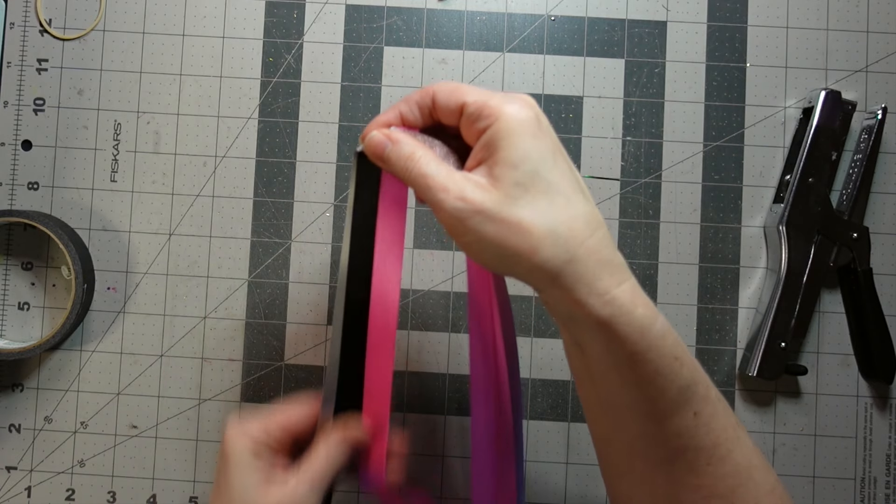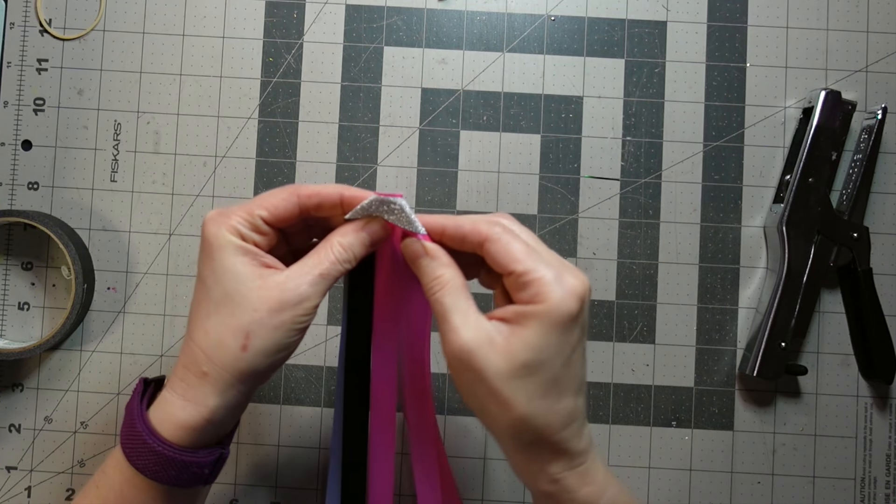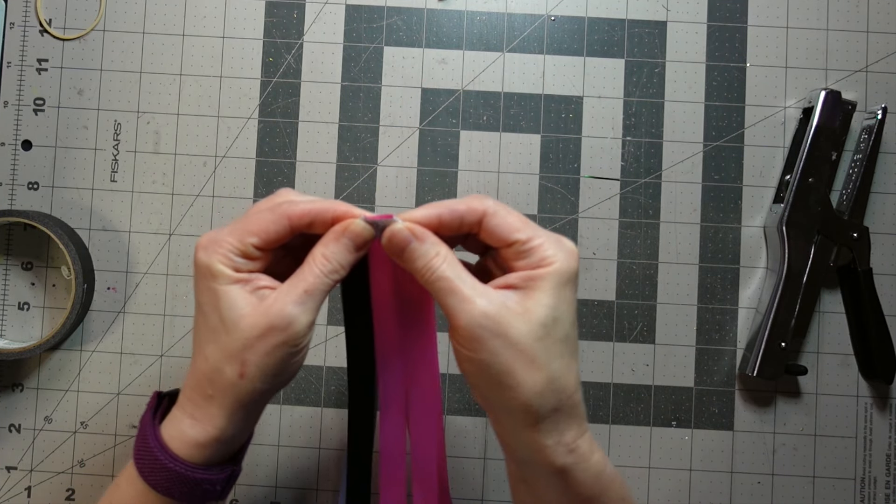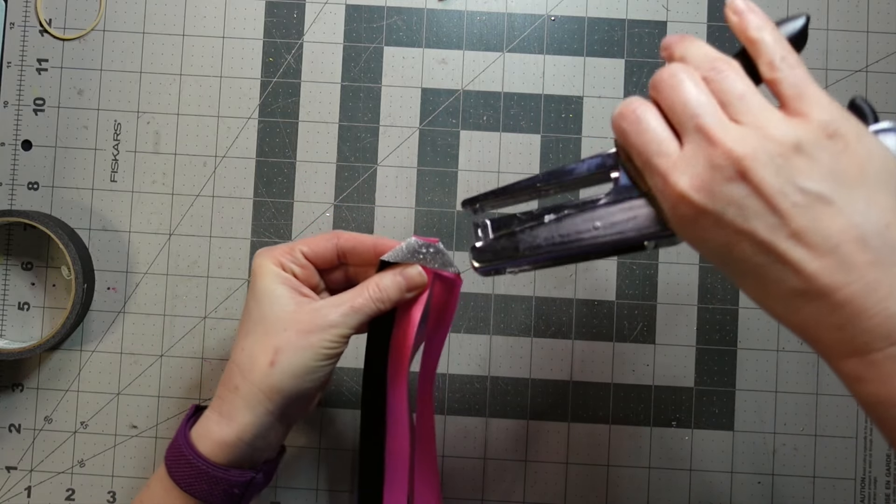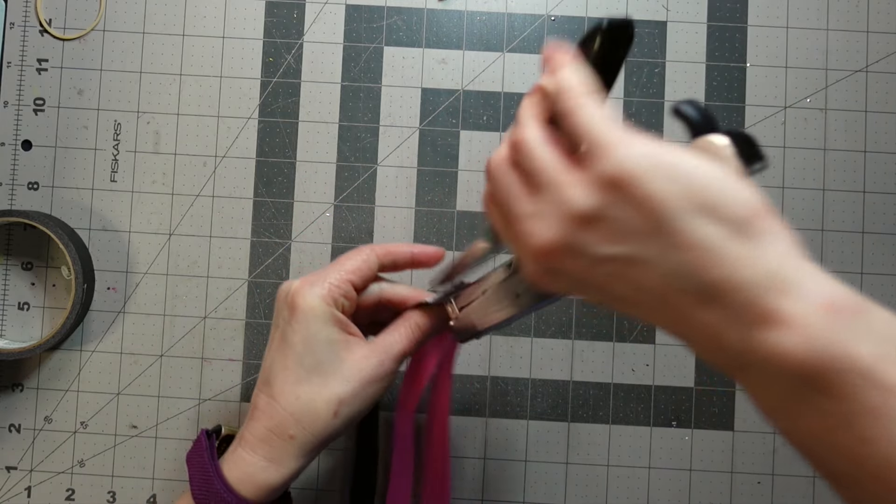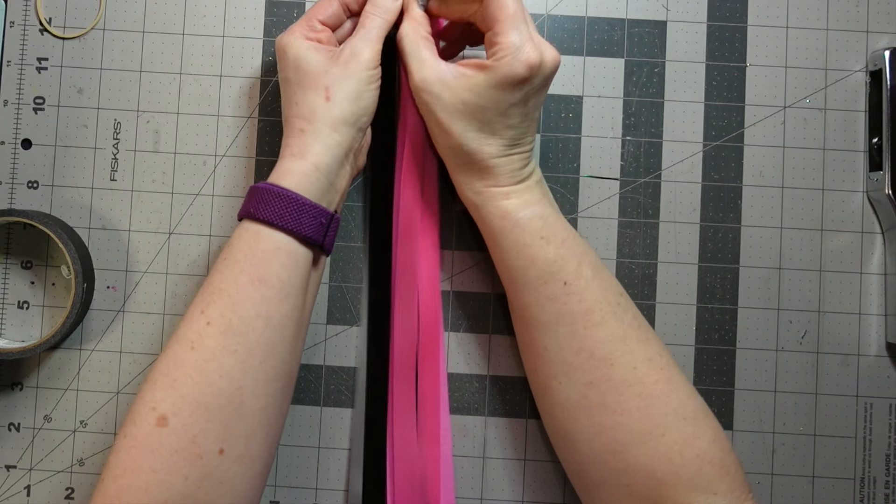I almost forgot a step. After you staple the tee together, then you've got to curl those. I'm not sure if it matters if you curl under or over. And then I give them a staple to hold everything in place. Now I tape it down.